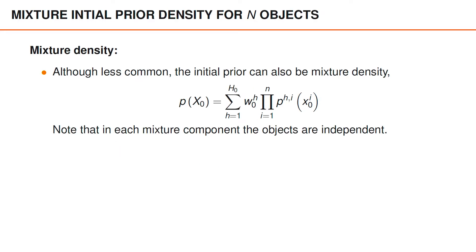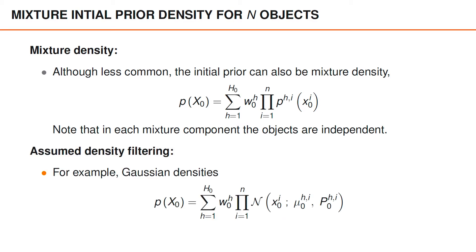Somewhat less common in practice is to have an initial prior that is a mixture density, like we see here. You should note that in this case, for each mixture component, the objects are independent. And again, given that we require assumed density filtering in MOT, if we assume Gaussian densities, then the initial prior would be a weighted mixture of independent Gaussians for each object.